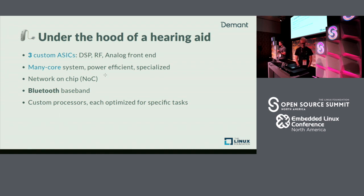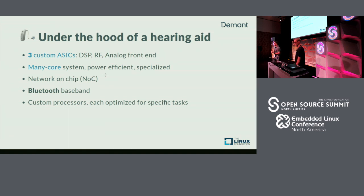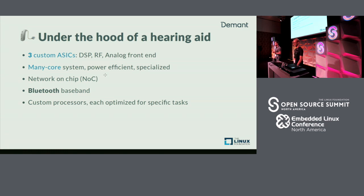How do we do that? If you pop the hood of a hearing aid, you'll find three custom ASICs inside: a DSP (digital signal processor), the RF chip that enables communication with the iPhone and TVs, and an analog front end. On these chips there's a many-cored system — we're actually up to 11 cores on this current generation of hearing aids, all optimized for their specific purposes. Some will be analyzing sound, some will do power management, all very power efficient. These cores and all the peripherals communicate using a network-on-chip.